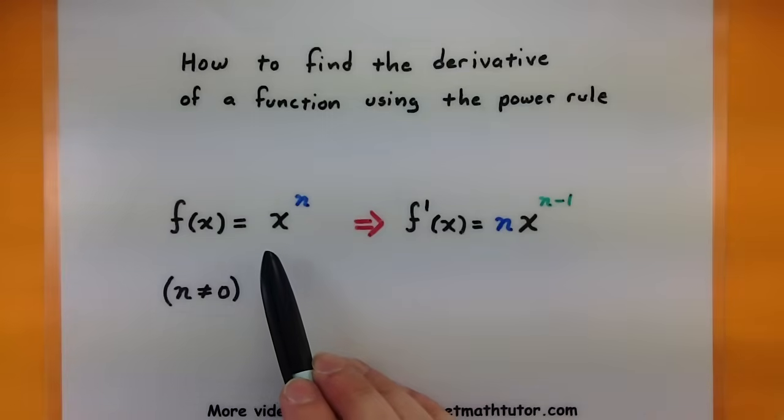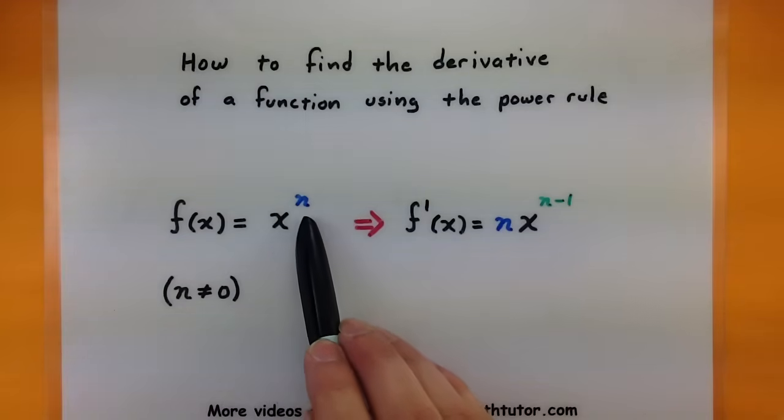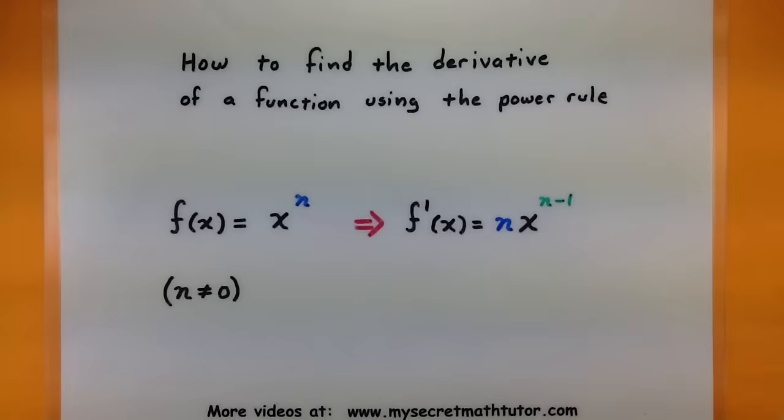The power rule is used in situations where you have x raised to a number power, like x raised to the fifth or x raised to the fourth. This rule works as long as that power is not equal to zero.